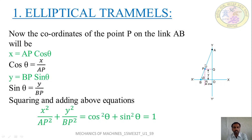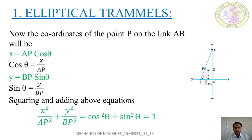This concludes the explanation of the elliptical trammel. The elliptical trammel is used to draw ellipses, and it is an inversion of the double slider crank chain obtained by fixing the slotted plate, that is link 4.